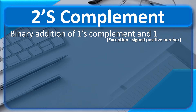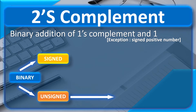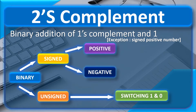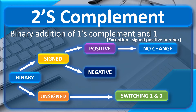In the previous presentation, we learned how to find 1's complement. Let us summarize. For unsigned number, it is obtained by switching 1 and 0. For signed positive number, its 1's complement is same as the original, with no change. For signed negative number, it is obtained by keeping the sign bit the same but switching the magnitude bits 1 and 0.